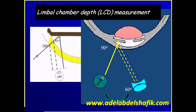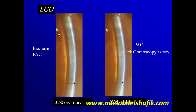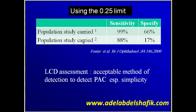Recently, the terminology LCD — limbal chamber depth — has been introduced, just adding more terminology. The key point is: if the depth is one quarter or less, it is an occludable angle and you need to perform gonioscopy. If it's more than one quarter, you are safe.